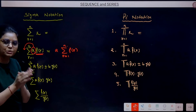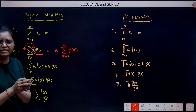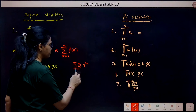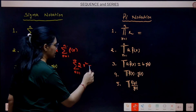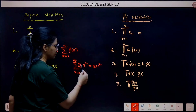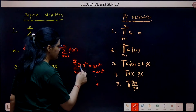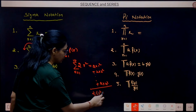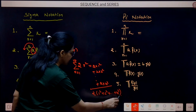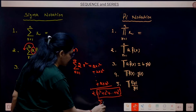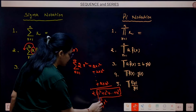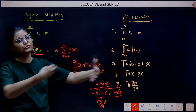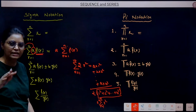For example, sigma of 2R², r from 1 to 10, means 2·1² + 2·2² + ... + 2·10². When added, 2 comes out as common, leaving 1² + 2² + ... + 10². So you can write it as 2 · sigma(R²), r from 1 to 10. Just as you take a common factor out in addition, you can do the same directly with sigma. Third property: if expressions are in addition or subtraction, you can separate them into individual sigmas.